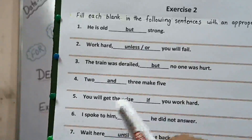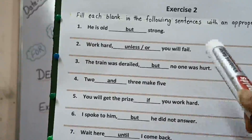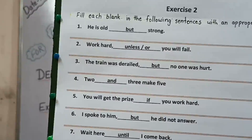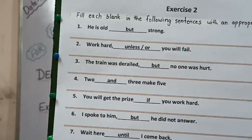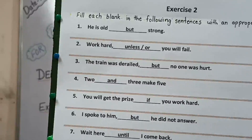Fifth part: you will get the prize if you work hard. Here the condition is given — when you will get the prize if you work hard. Sixth part: I spoke to him but he did not answer. Here there is a contradiction. Seventh: wait here until I come back. Here there is a timing given, so the answer is 'until'.